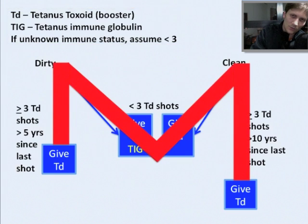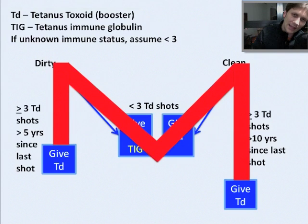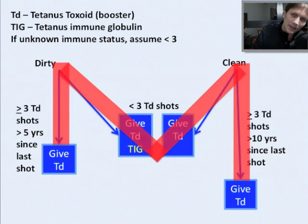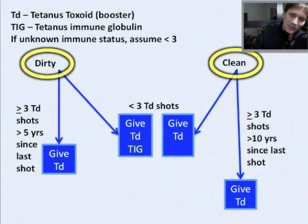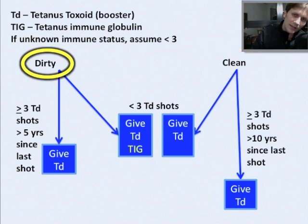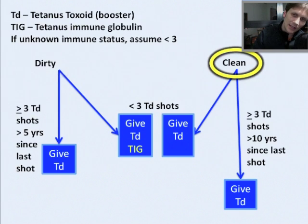So here's how the mnemonic works. You think of the letter M because everything hinges on this letter. The first thing you need to determine when somebody comes in with a wound is whether it's dirty or clean. If it's dirty, you're dealing with the left part of the M, and if it's clean, the right part of the M.